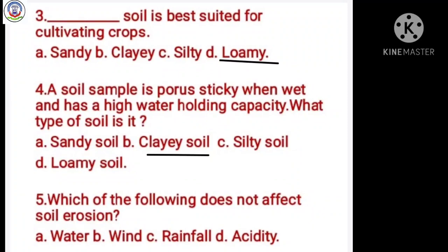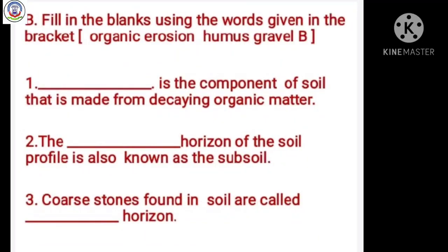Number 5: Which of the following does not affect soil erosion? Option A water, B wind, C rainwater, D acidity. Answer is D, acidity.